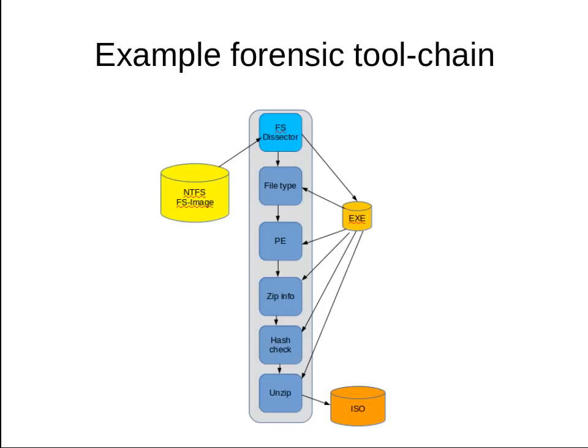In order to understand the Anycast's place and shortcomings in a computer forensic framework, we must discuss the concept of the computer forensic tool chain. In this image we see an example of a tool chain. Within a computer forensic framework, multiple tool chains will be active at the same time. In this example, we have an NTFS file system image in which a self-extracting executable zip file exists. If we follow the tool chain, we see that there is a file system detector that will extract an executable, and its file type will be checked.